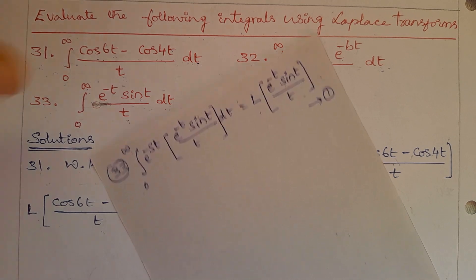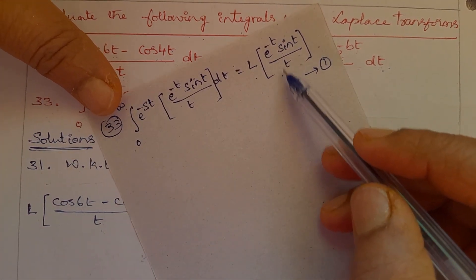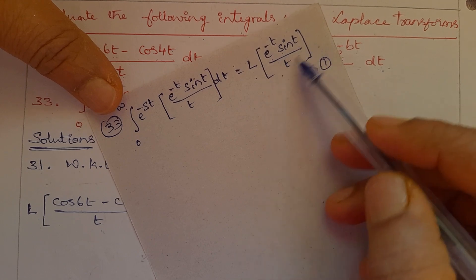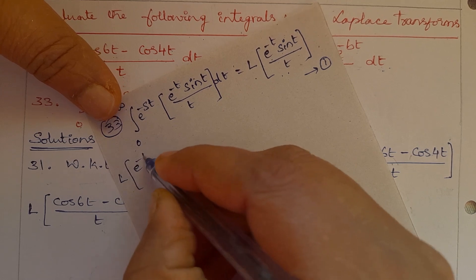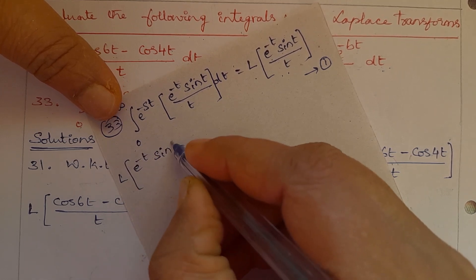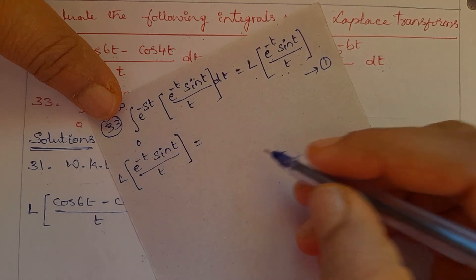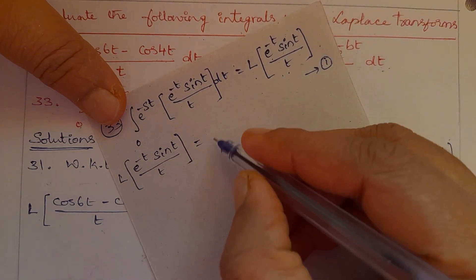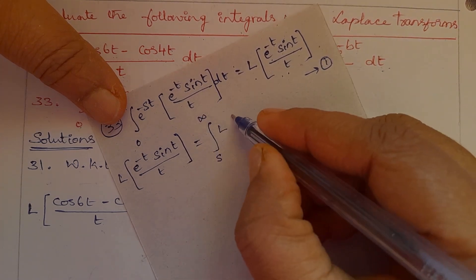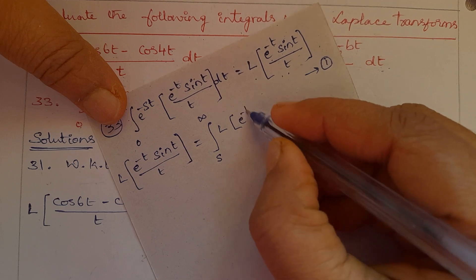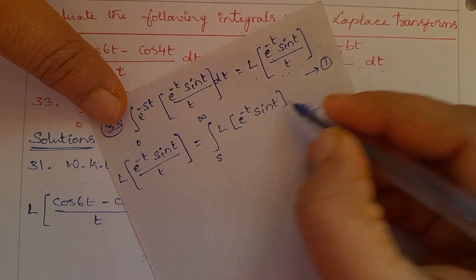From that formula, we want to find the Laplace Transform of e^(-t) sin(t) divided by t. Apply the third property of Laplace Transforms — that is, the integral from s to infinity of the Laplace Transform of e^(-t) sin(t), ds.